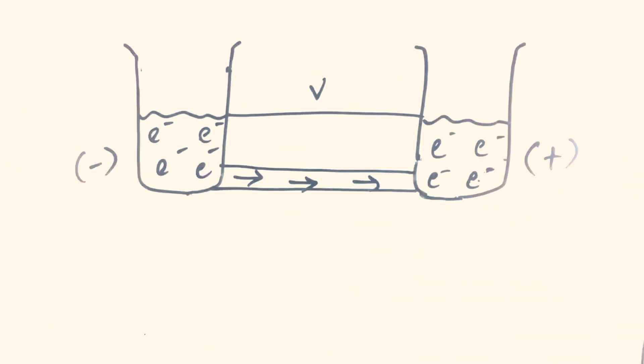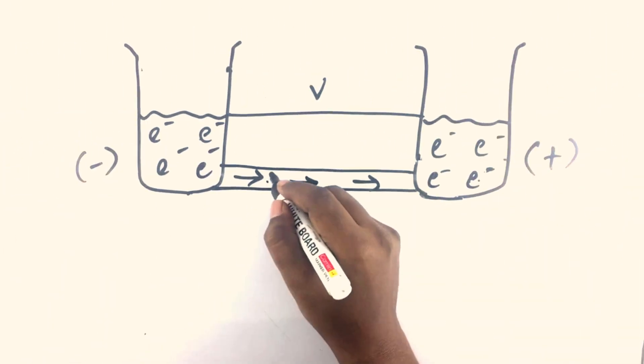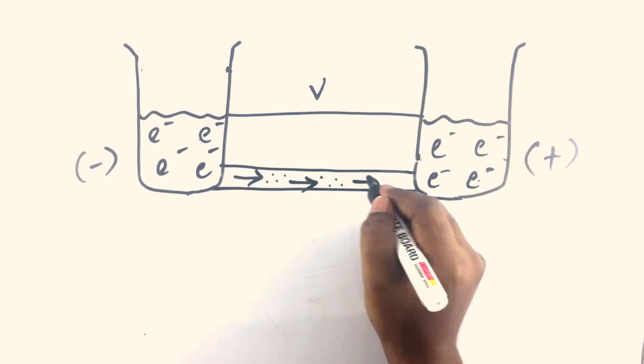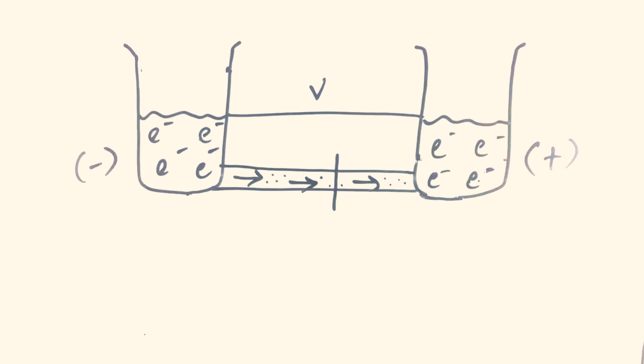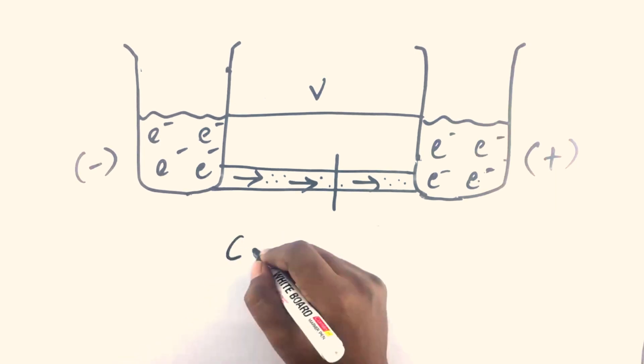Now we will see what is current. When we connected the pipe or the wire, water molecules started to flow. The amount of water molecules passing through a cross sectional area of a pipe in a second can be seen as current.